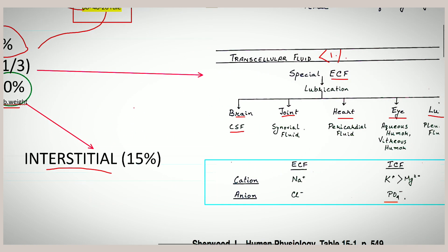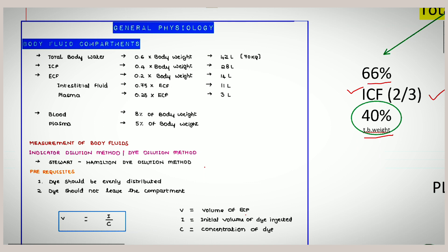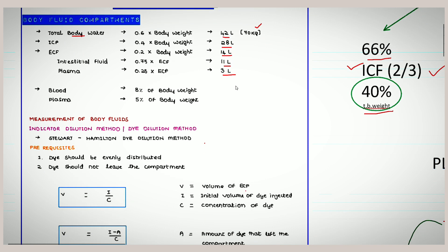You may get questions like 'which of the following is a transcellular fluid?' with options covering brain, joint, heart, eyes, and lungs. Now let us look at volumes in liters. For an ideal body weight of 70 kg: total body water is 0.6 × 70 = 42 liters; ICF is 28 liters; ECF is 14 liters. ECF is further divided into interstitial fluid at 11 liters and plasma at 3 liters.